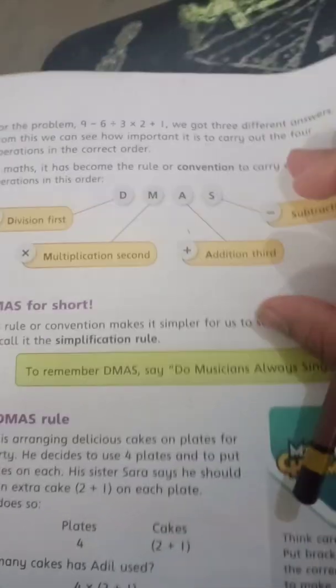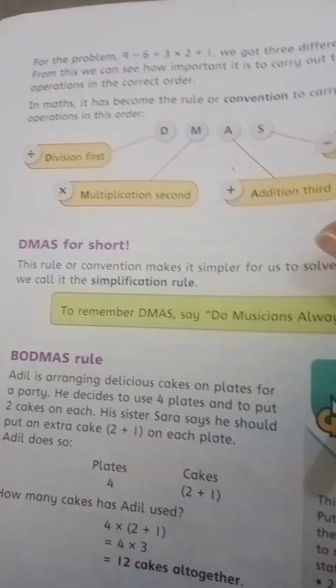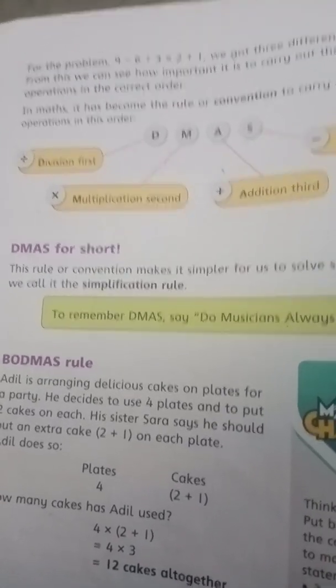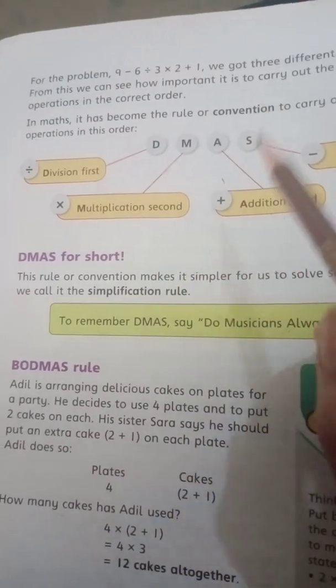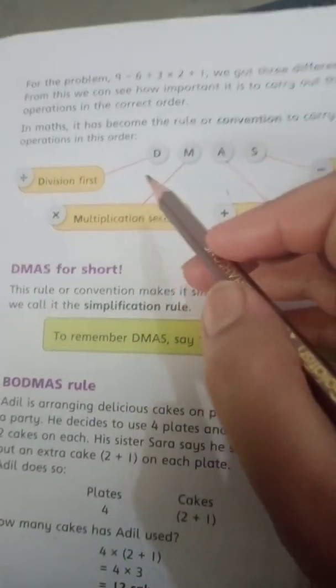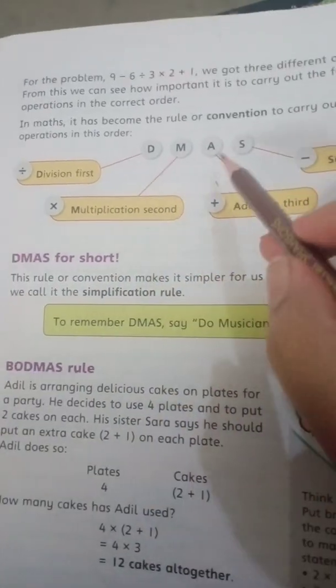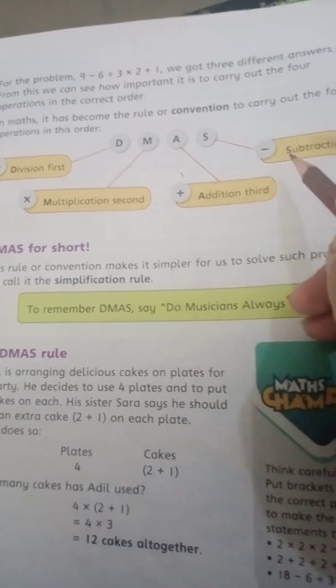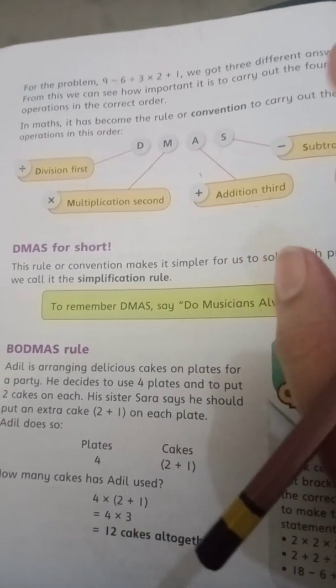Students, when you have two operations in one expression, then how do you solve it? According to DMAS. What is DMAS? DMAS is a rule of math. D stands for division, M stands for multiplication, A stands for addition and S stands for subtraction. If you have two operations.